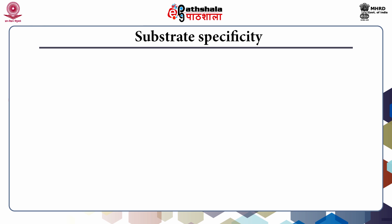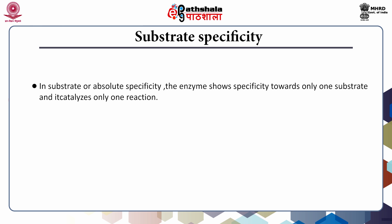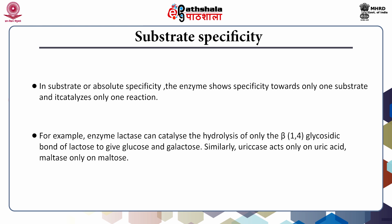Substrate specificity: In this type of specificity the enzyme shows specificity towards only one substrate and catalyzes only one reaction. For example, the enzyme lactase can catalyze the hydrolysis of only the beta-1,4 glycosidic bond of lactose to give glucose and galactose. Similarly, uricase acts only on uric acid, and maltase acts only on maltose.